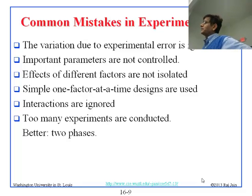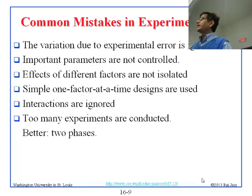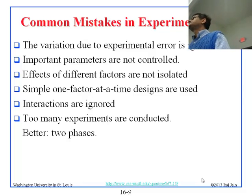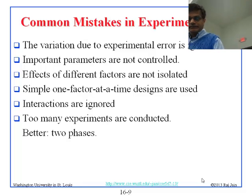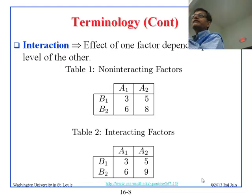Simple one-factor-at-a-time designs are used, interactions are totally ignored, and too many experiments are conducted. [Student question: When you said variation is ignored, do you mean they don't check the confidence intervals?] The thing is — take this previous example. We don't know how good the number three is. If you repeated it, it could be 3.1, it could be 5 or 4. You have to repeat the same thing many times to figure out what is the experimental error.